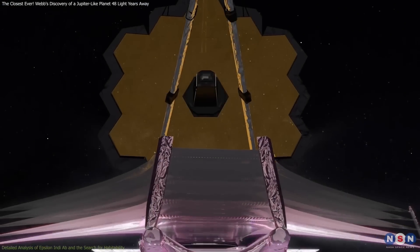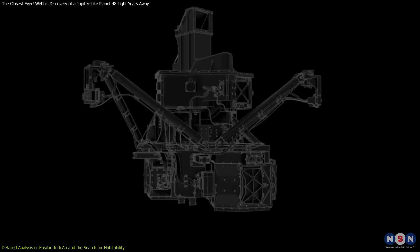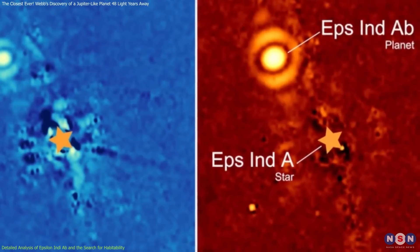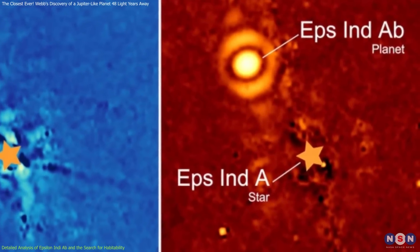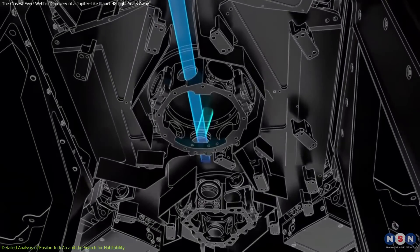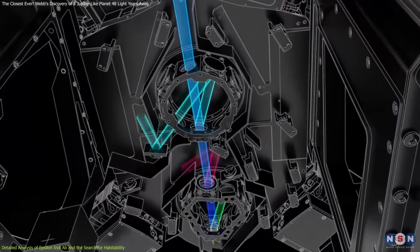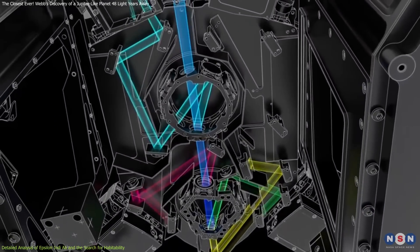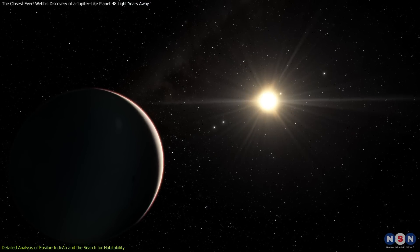The James Webb Space Telescope has utilized the sophisticated mid-infrared instrument to capture unprecedented images of this exoplanet. This instrument's advanced imaging capabilities are critical for studying such distant worlds, particularly those that do not transit their stars.